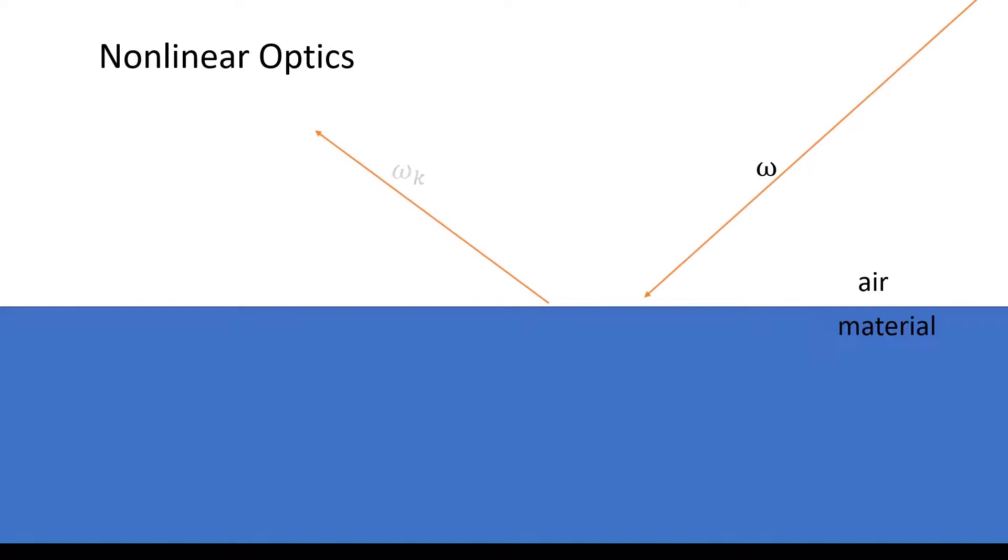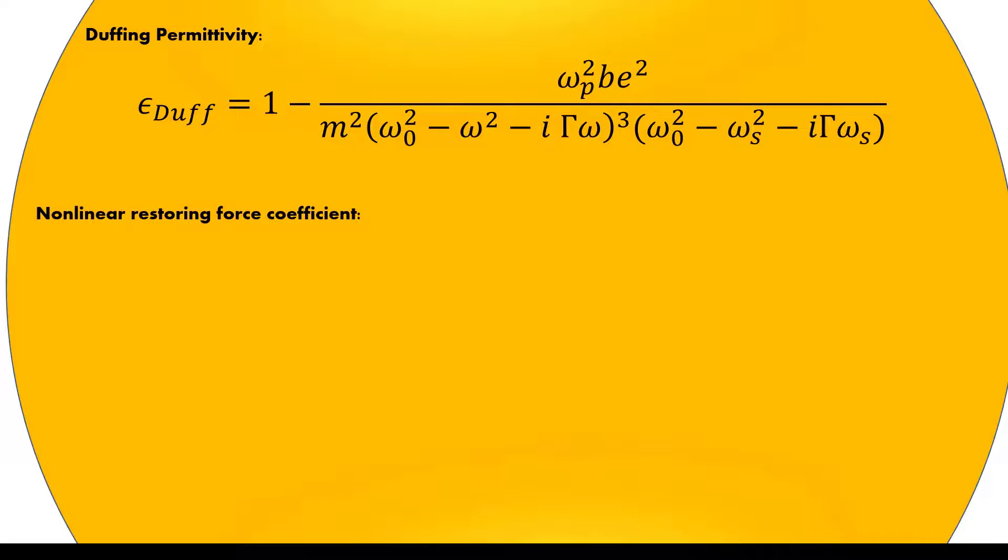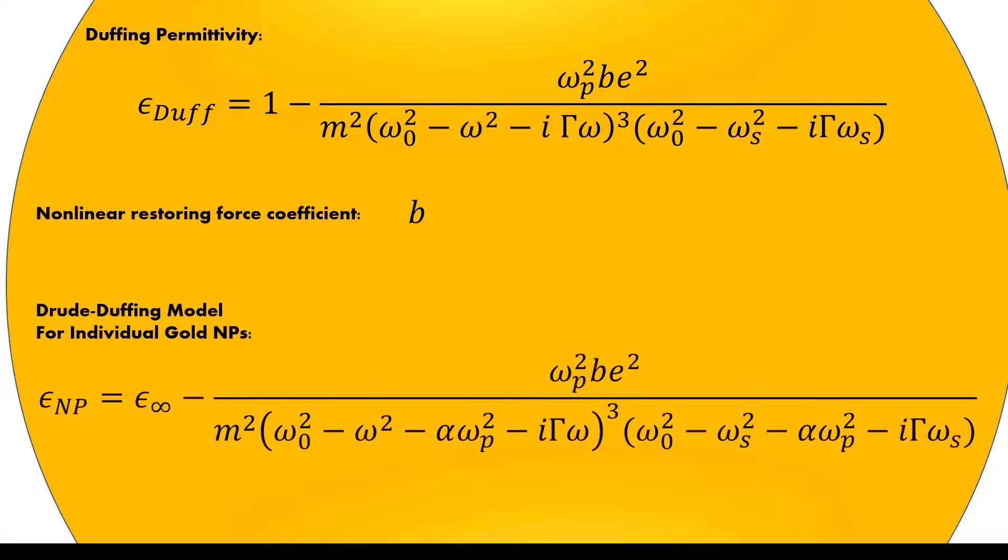We also look at the nonlinear case where we consider higher order terms in the Drude model. From this, we arrive at the Duffing permittivity, which is an extension of the permittivity for individual nanoparticles for the nonlinear third-order case.